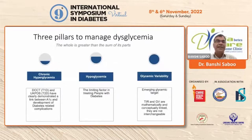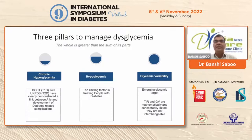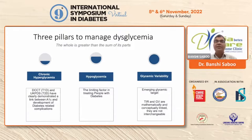There are three pillars to manage dysglycemia. Before UKPDS, this trial showed us that hyperglycemia is to be controlled — by better glycemic control, reducing A1C decreases diabetes-related complications. But the limiting factor was hypoglycemia, which prevented achieving tight glycemic control. Then we understood it is not only glucose control or less hypoglycemia, but also glycemic variability. To know glycemic variability, we need continuous glucose monitoring, and through that we can know time in range — how much time in 24 hours a person remains in range.